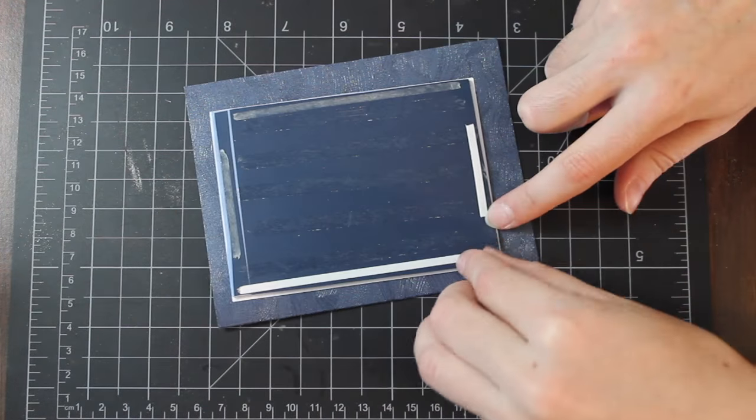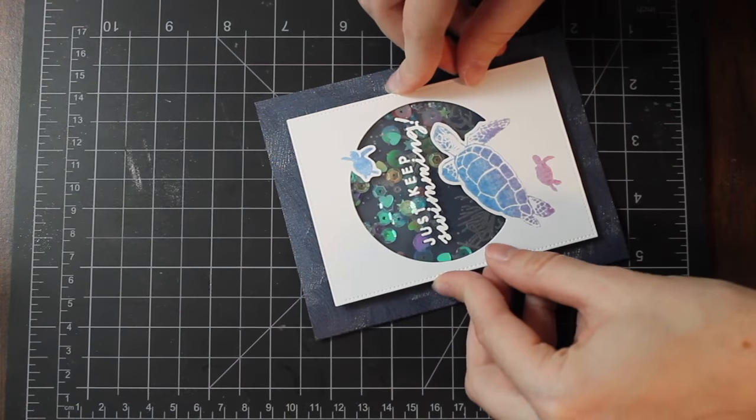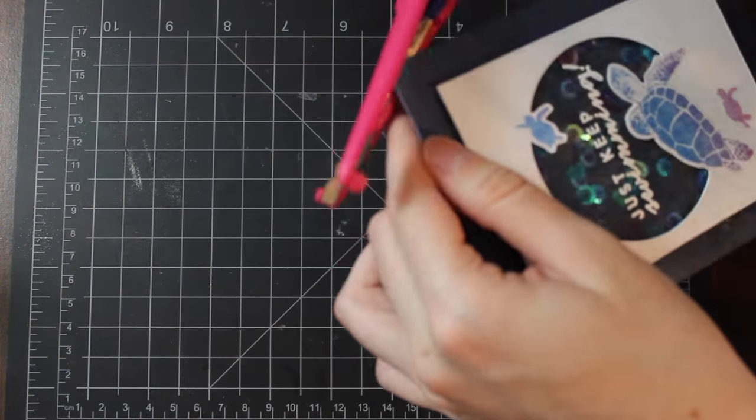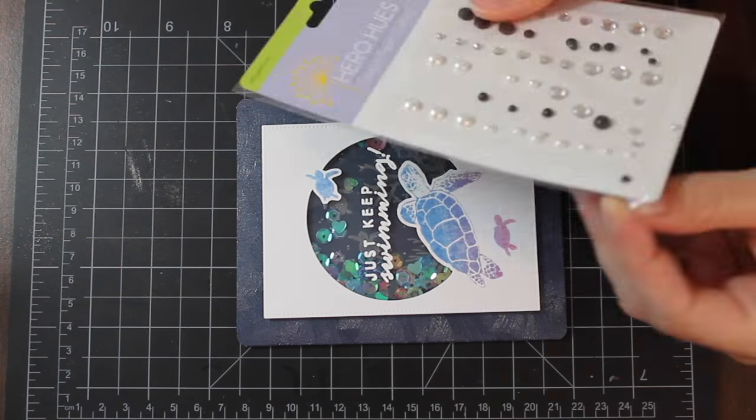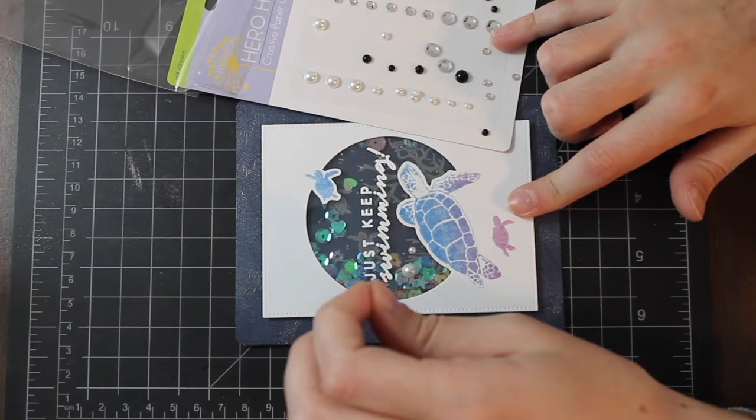To adhere my panel, I'm also using a mix between my advanced tape glider and then also some score tape, just to make sure that it's adhered down really well. And to top it off, I just add some pearls to it and that pretty much finishes off the card.